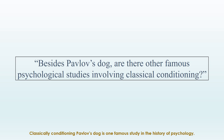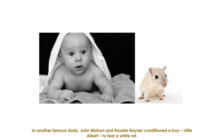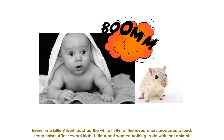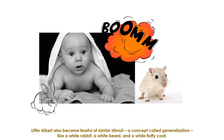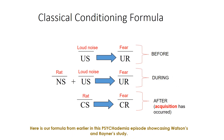In another famous study, John Watson and Rosalie Rayner conditioned a boy — Little Albert — to fear a white rat. Every time Little Albert touched the white fluffy rat, the researchers produced a loud, scary noise. After several trials, Little Albert wanted nothing to do with that animal. Little Albert also became fearful of similar stimuli, a concept called generalization — such as a white rabbit, a white beard, and a white fluffy coat.